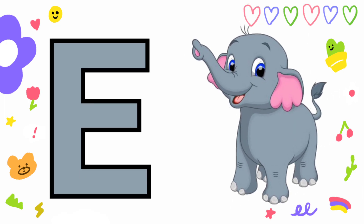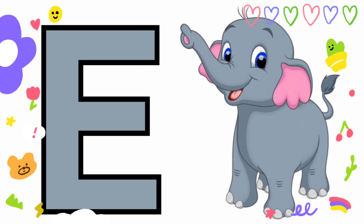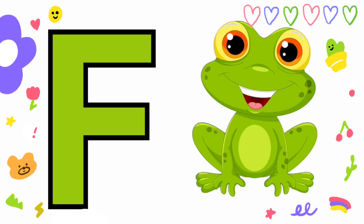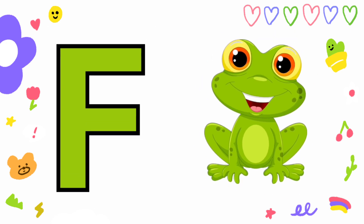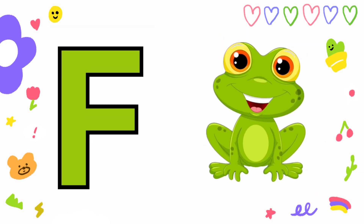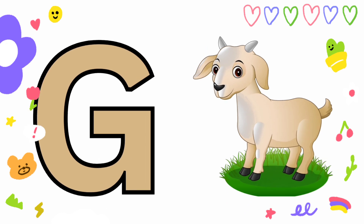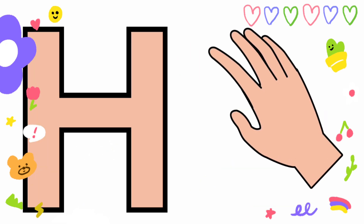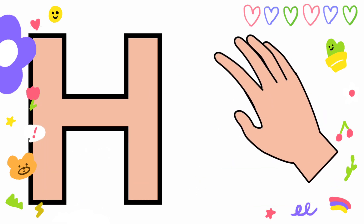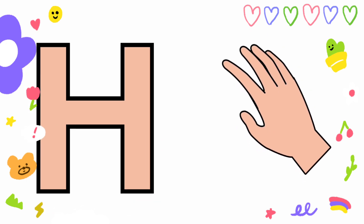E is for Elephant, E-E-Elephant. F is for Frog, F-F-Frog. G is for Goat, G-G-Goat. H is for Hand, H-H-H-Hand.